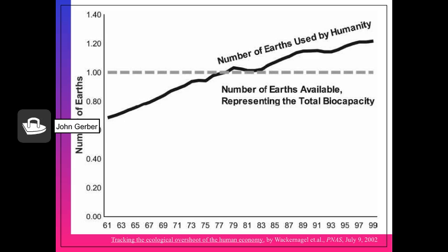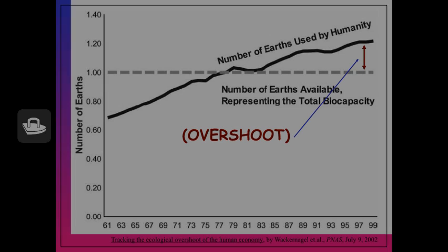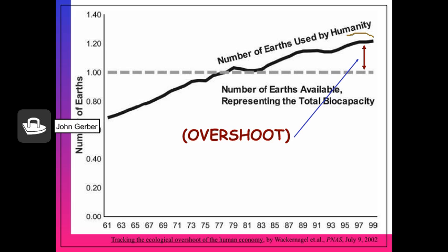Another way of looking at this: over time, we see the amount of resources humans have used, and at some point around the late seventies, we passed the amount of resources available. There's only one planet Earth, but we use about 1.2 planet Earths each year. We call this overshoot — the amount of resources used annually compared to what's available annually. We do this by digging up coal and burning fossil fuels.